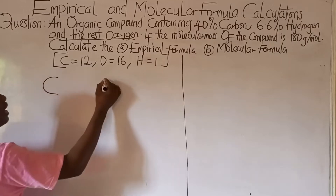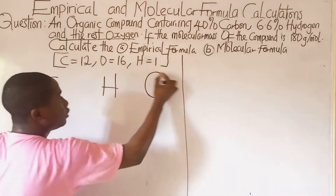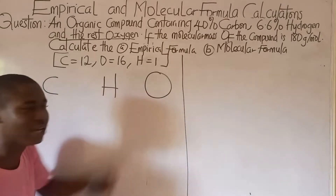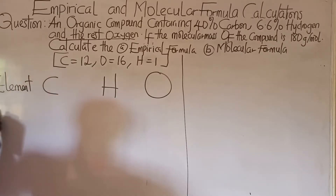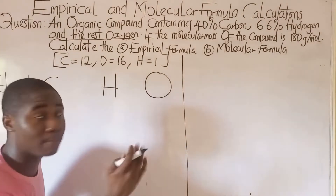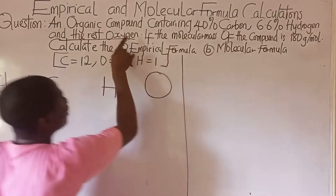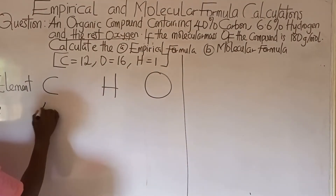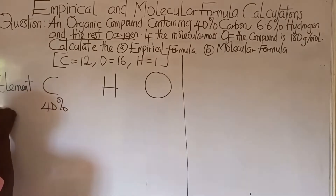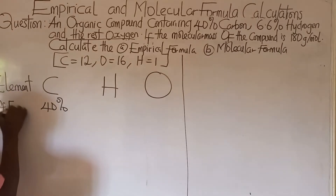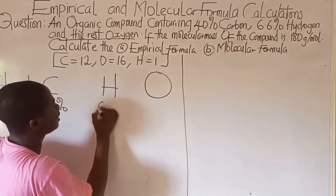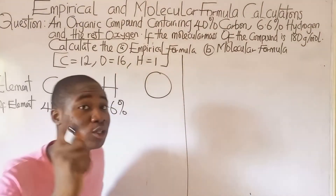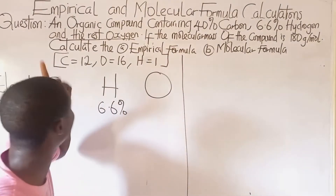What are the elements given? We have three elements in this compound: carbon, hydrogen, and oxygen. First you write out the elements given in the question. The percentage of carbon is 40 percent, and the percentage of hydrogen is 6.6 percent.